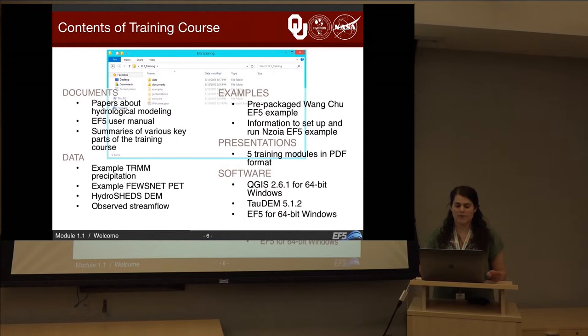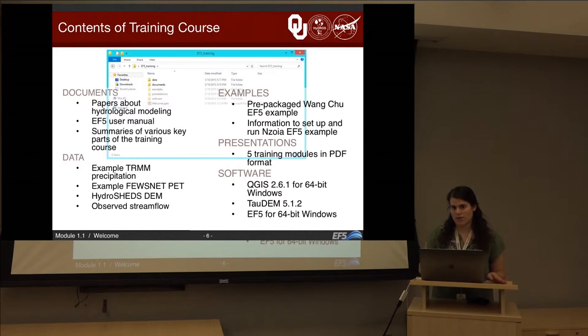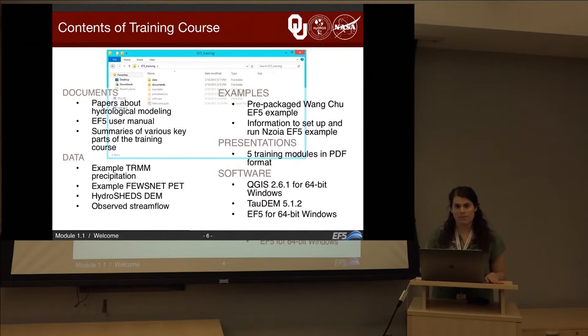Within the folder you've downloaded, you have folders for documents, data, examples, presentations, and software. You can follow along with the presentations folder, which contains five training modules in PDF format. Within the documents folder, we have papers about hydrologic modeling, the EF5 user manual, and summaries of various key parts of the training course. These summaries can help if you forgot what happened in the previous training course. We also give you the software: QGIS, TauDEM, and the newly updated EF5.